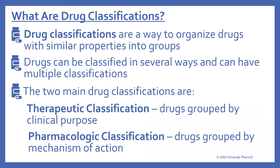So we'll begin by looking at what are drug classifications. Drug classifications are a way to organize drugs with similar properties into groups. Drugs can be classified in several ways and can have multiple classifications. The two main drug classifications are therapeutic classification, which is when drugs are grouped by clinical purpose, and pharmacologic classification, which is when drugs are grouped by their mechanism of action.